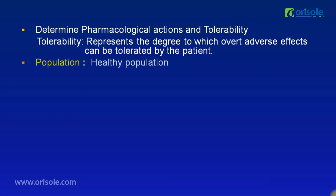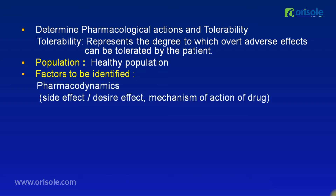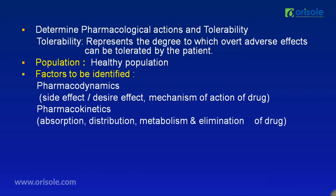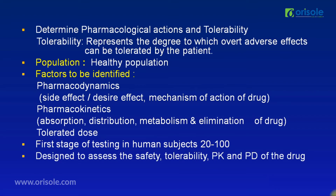The population in phase 1 consists of healthy subjects. Factors identified in phase 1 studies include pharmacodynamics — the desired effects, side effects, or mechanism of action — pharmacokinetics, covering absorption, distribution, metabolism, and elimination of the drug, and the tolerated dose. Phase 1 is the first stage of testing in human subjects, involving around 20 to 200 volunteers. These studies are designed to assess the safety, tolerability, pharmacokinetics, and pharmacodynamics of the drug.